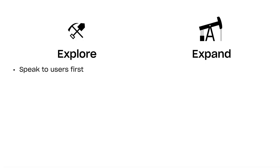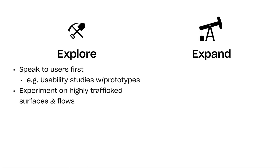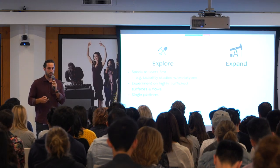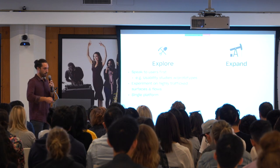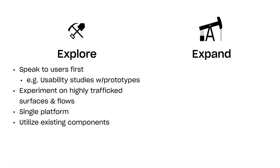In the explore phase: first, speak to users through usability studies, paper prototypes, or Invision prototypes. Second, experiment on highly trafficked surfaces and flows so you reach statistical significance sooner. Third, focus on a single platform — often due to engineering resources you'll have only an iOS or web engineer available, so choose one platform and explore there; there will be time to reach parity later. Fourth, utilize existing components rather than designing new ones unless you can directly correlate that component to the experiment outcome.